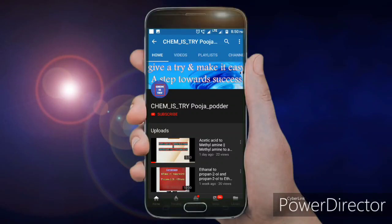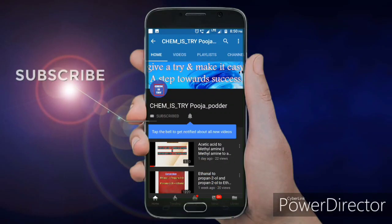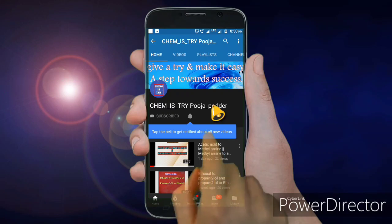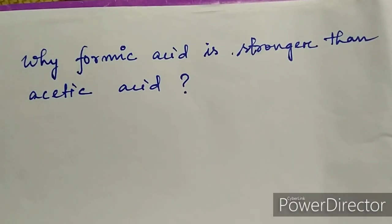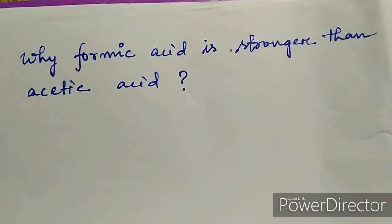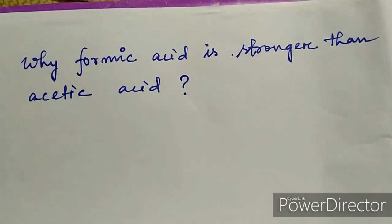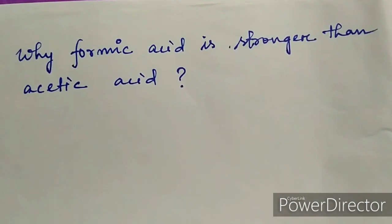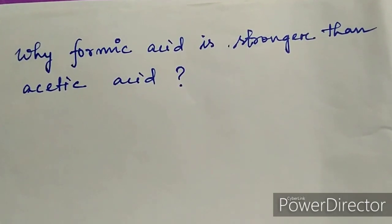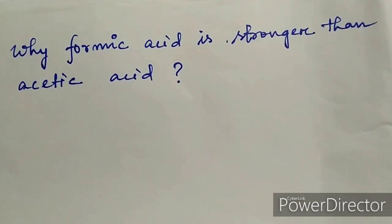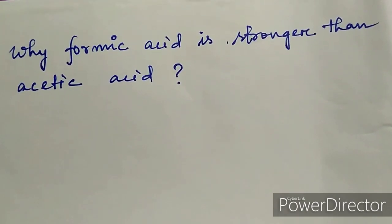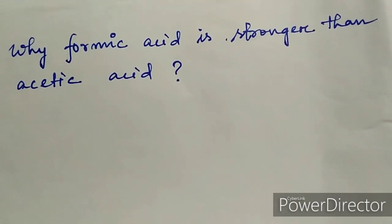Hello everyone, welcome to my study channel chemistry. Subscribe to my channel by clicking the subscribe button and pressing the bell icon so that you never miss any updates. In today's video, the question is: why is formic acid stronger than acetic acid? Before we start, we will look at the formulas of formic acid and acetic acid.